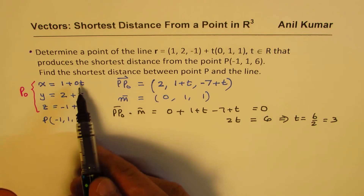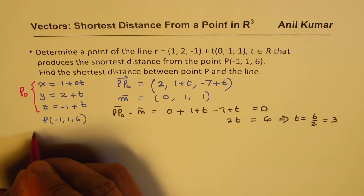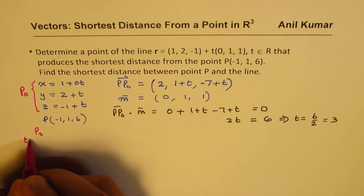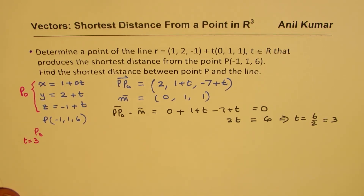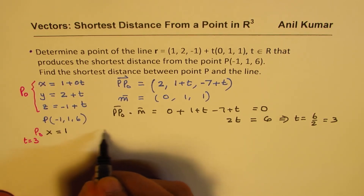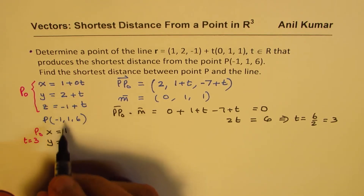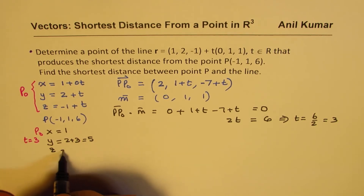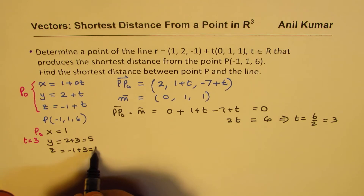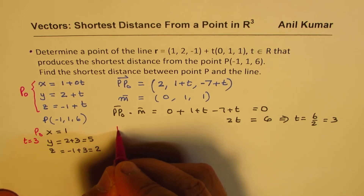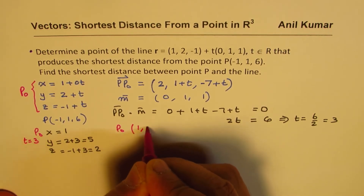Now we know t = 3, so we can find point P0. Substituting t = 3: x = 1, y = 2 + 3 = 5, z = −1 + 3 = 2. So we get our point P0 = (1, 5, 2).